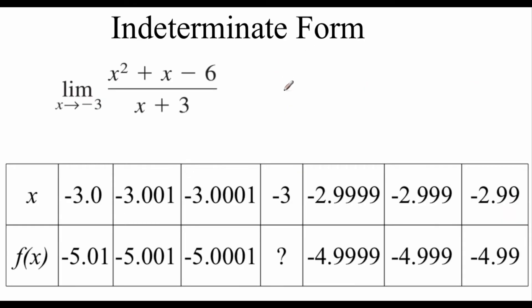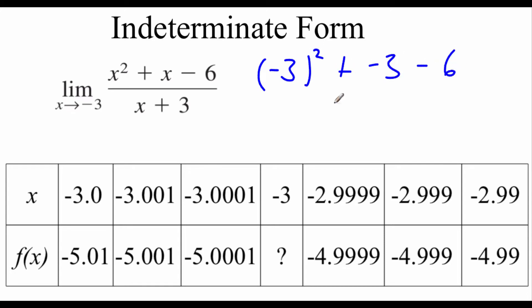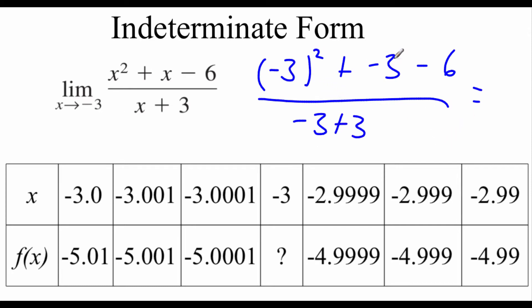One technique we've talked about for solving limits is direct substitution. So if we were looking at the limit of x squared plus x minus 6 over x plus 3 as x approaches negative 3, and we tried direct substitution, we'd get negative 3 squared plus negative 3 minus 6 all over negative 3 plus 3. Simplifying, we get 0 on top and 0 on the bottom — this 0 over 0 fraction is called indeterminate form.